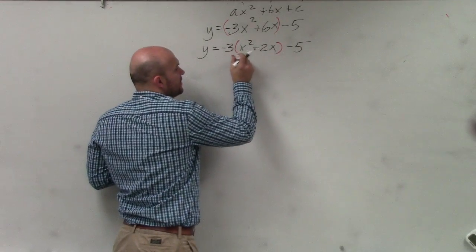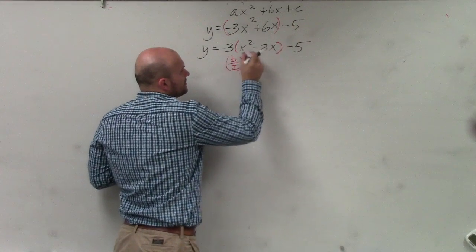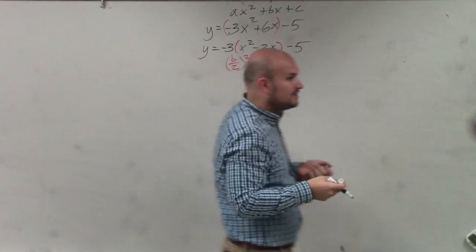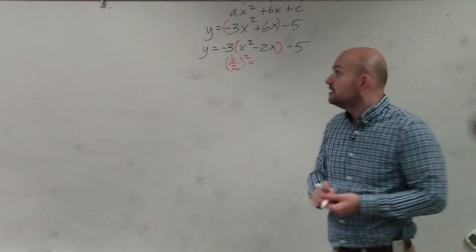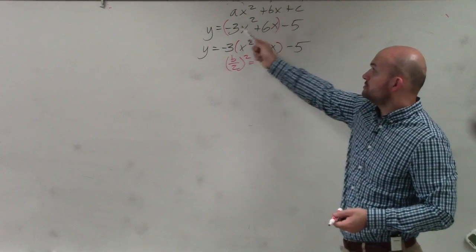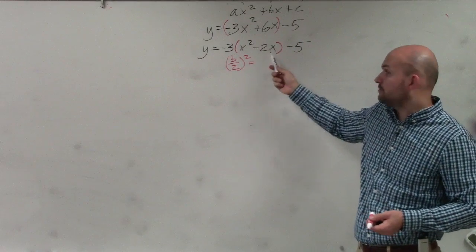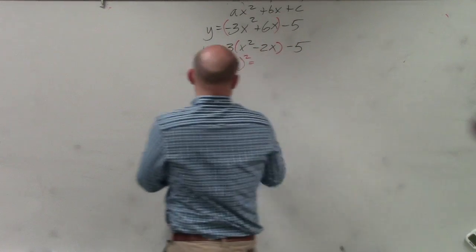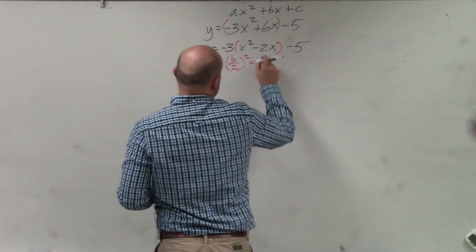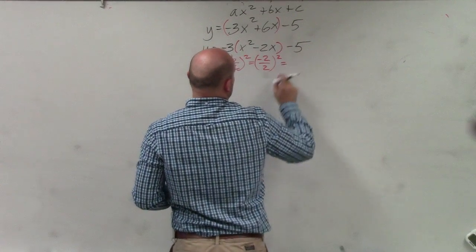Why do we want that? Because now we can complete the square, which again, basic formula is b divided by 2 squared. So you take b, which is your middle term. Don't take it from the original. Take it from the quadratic when a is equal to 1. So therefore, that's going to be negative 2 divided by 2 squared equals 1.